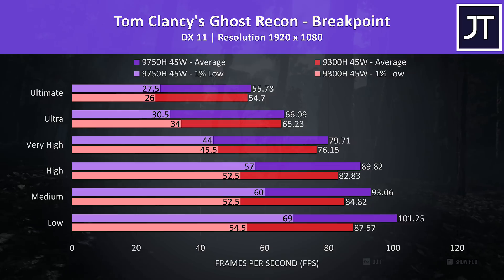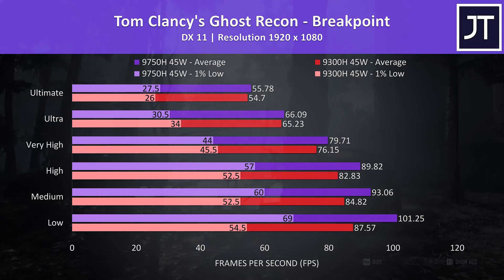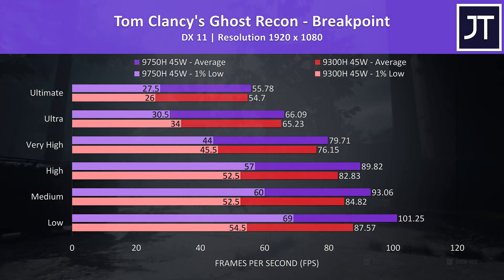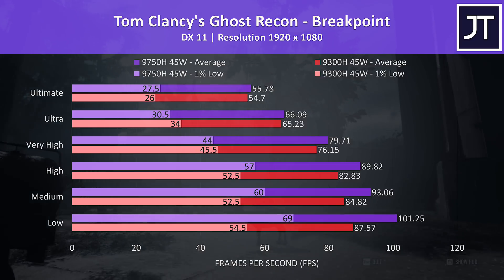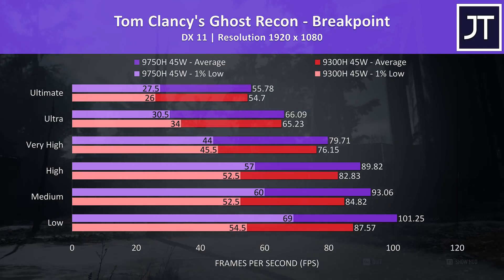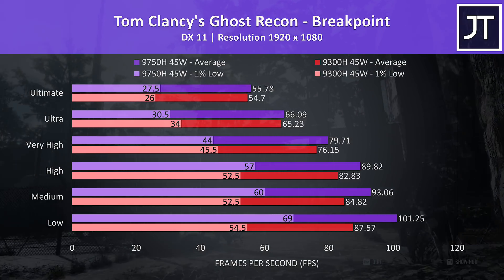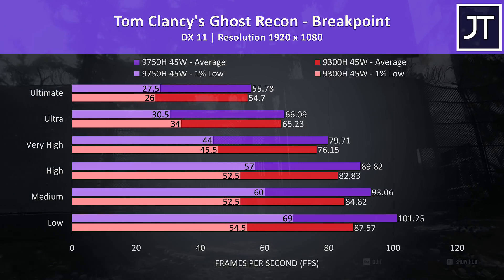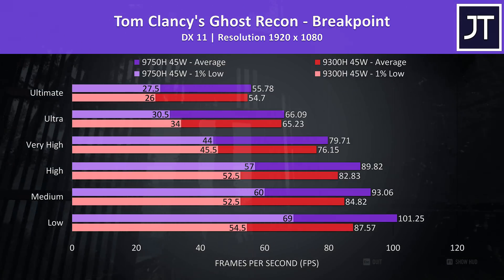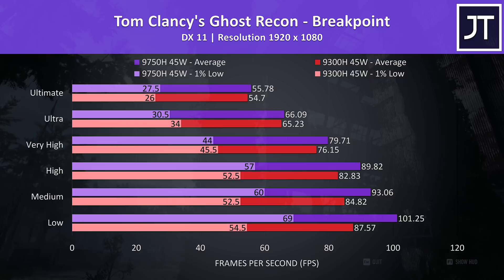Ghost Recon Breakpoint was tested using the game's benchmark tool. The i7 was ahead in all tests in terms of average FPS, however the margin closes in at higher settings. At Ultimate the i7 was just 2% faster than the i5, but at low settings it was just under 16% faster.